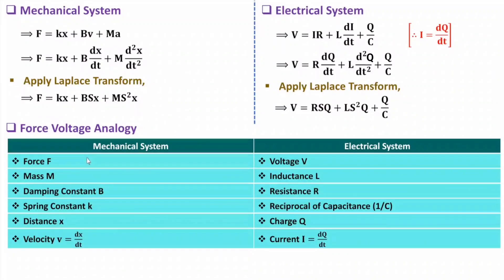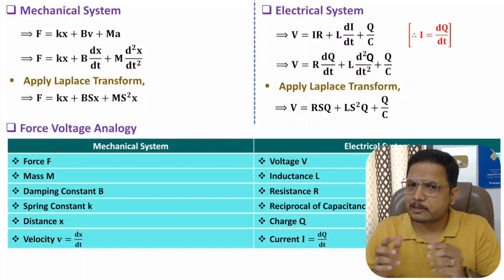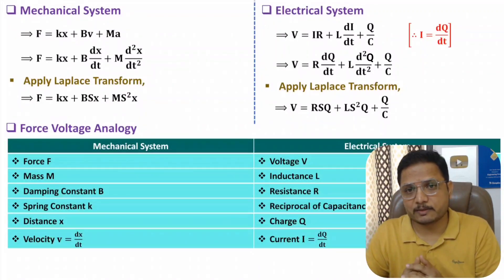This comparison is very important and has appeared in many competitive examinations as direct parameter comparison questions. To summarize: force = voltage, mass = inductance, damping constant = resistance, spring constant = 1/capacitance, displacement x = charge, and velocity = current i. I hope you have understood this. If there is any confusion, post it in the comment section — I will be happy to help. Thank you so much for watching.